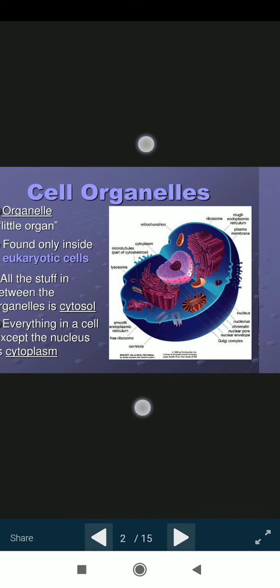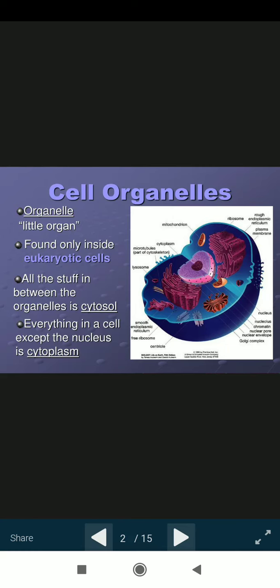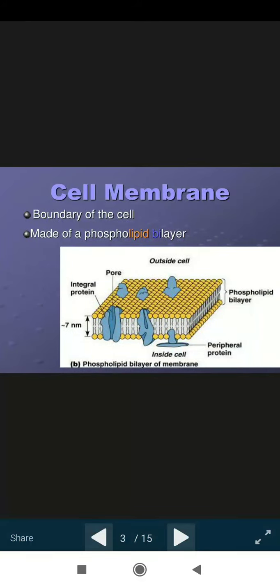All the stuff in between the organelles is cytosol. Everything in cell except the nucleus is cytoplasm. The cytoplasm is the colorless semi-fluid or dense liquid. The cell membrane is the important organelle of the cell which is the outermost boundary of the cell made up of phospholipid bilayer. It includes pores, integral proteins, peripheral proteins, and phospholipid bilayers. We are seeing here the cell membrane.